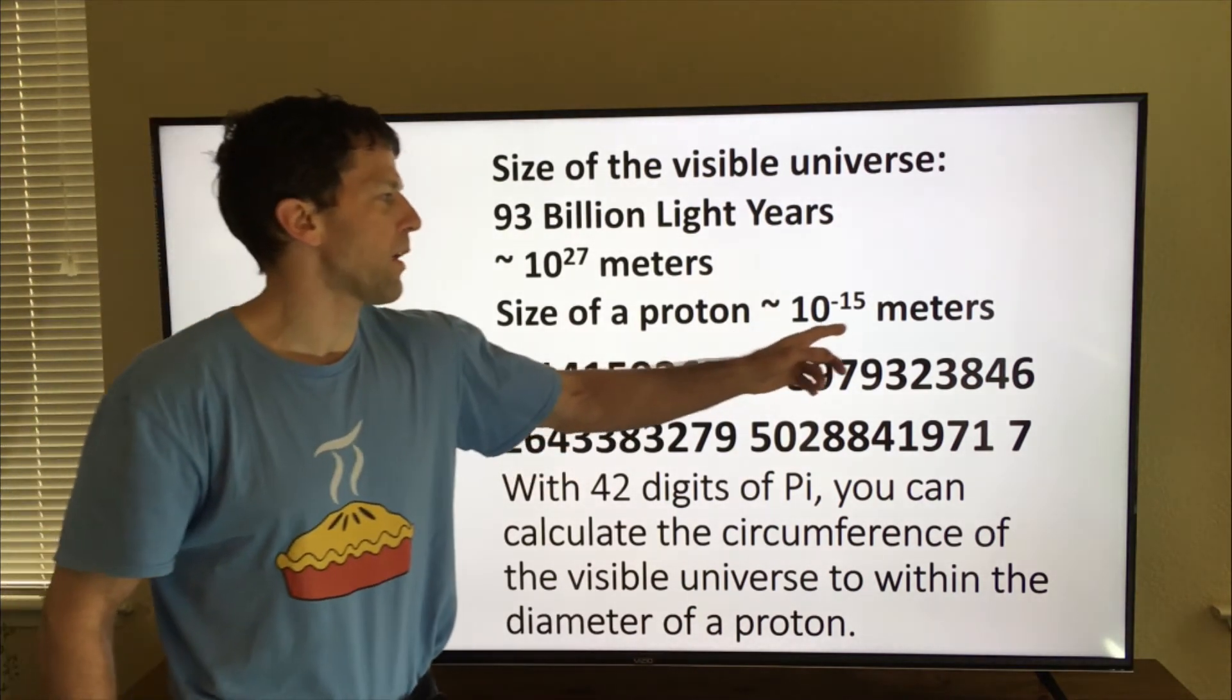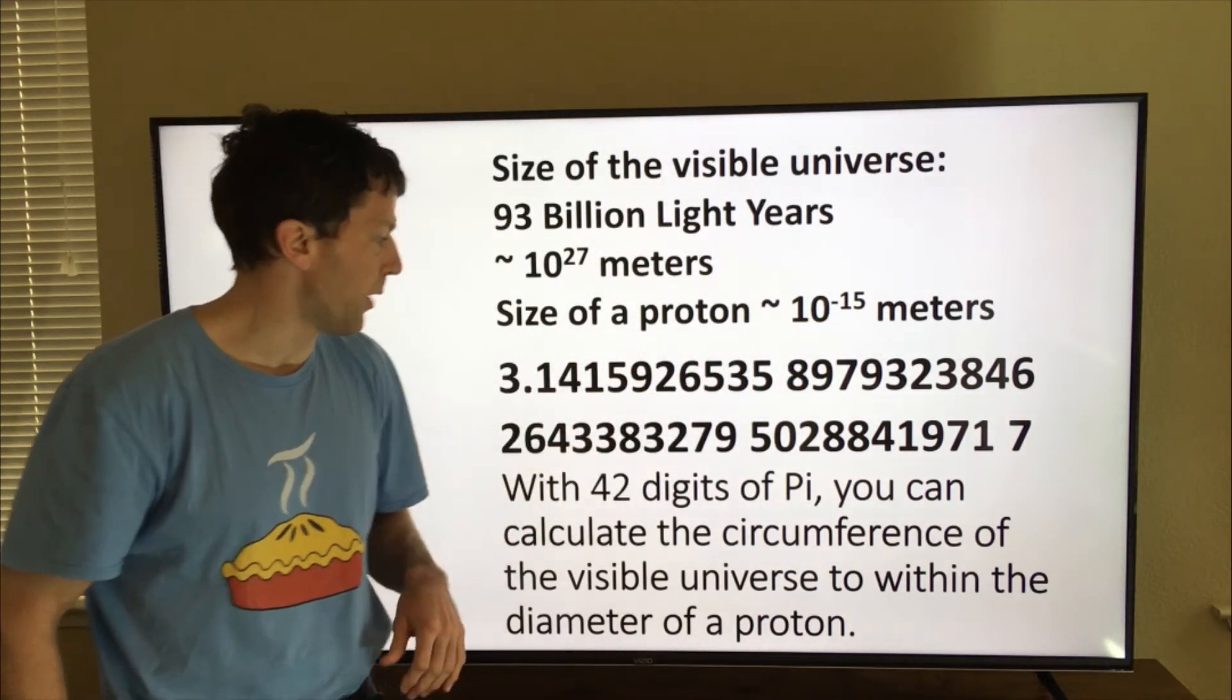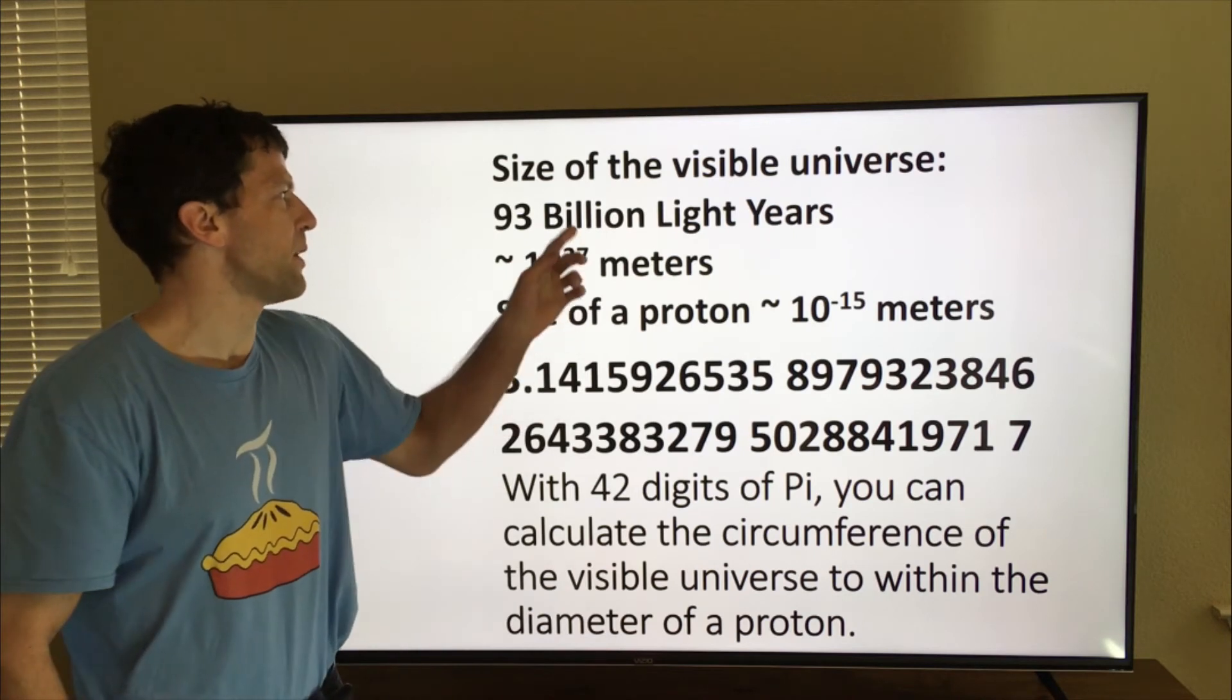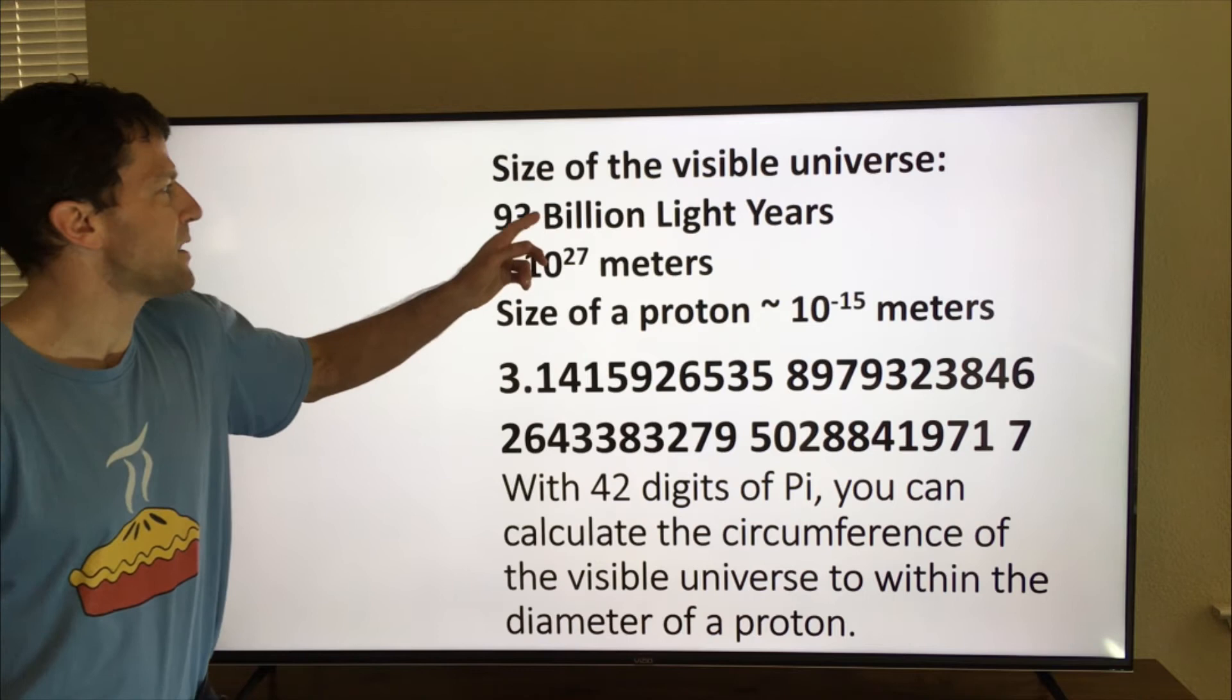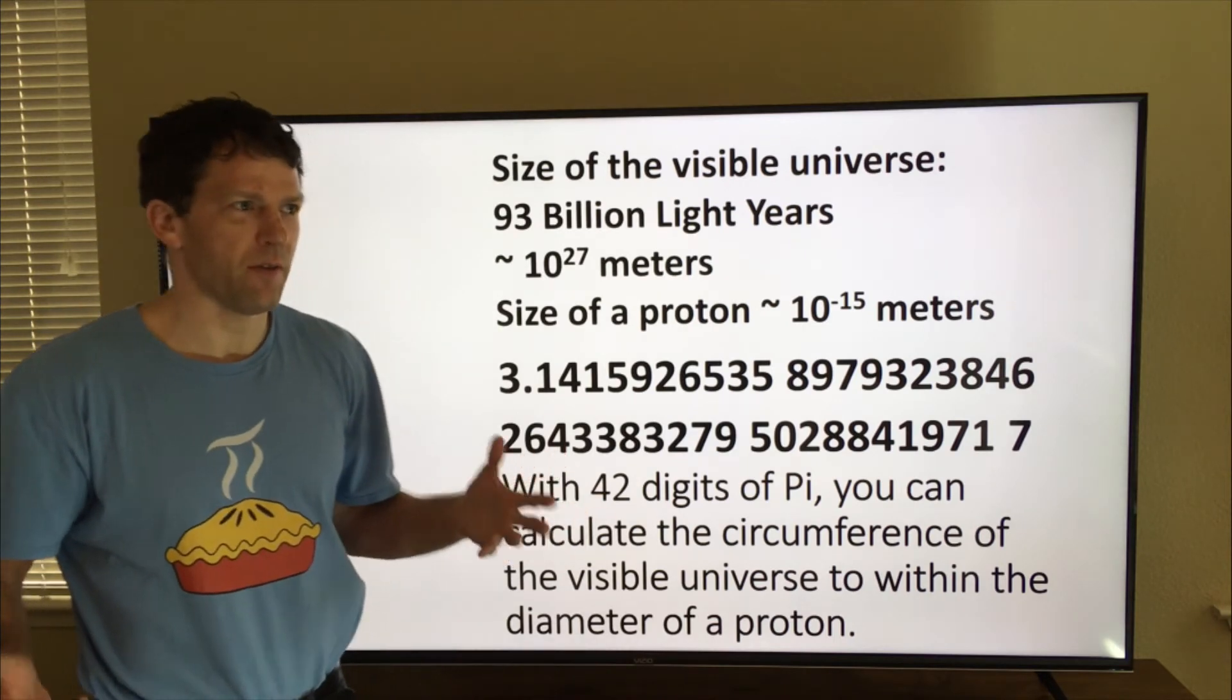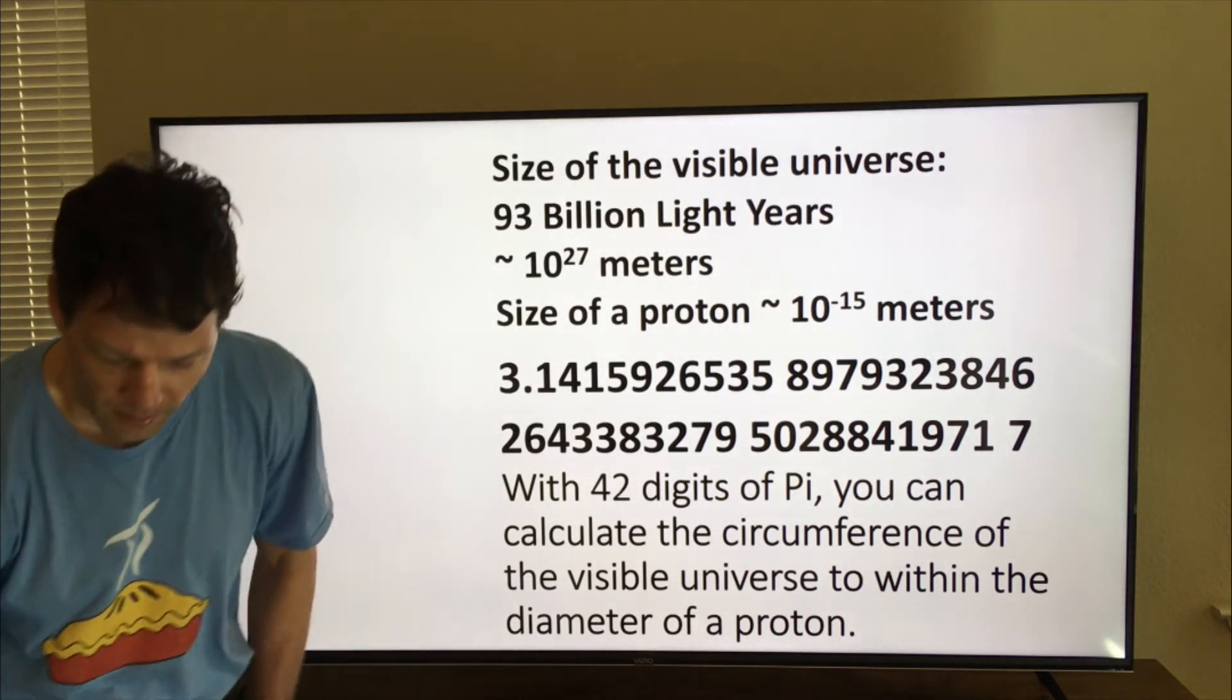Well, the Planck length scale is about 20 orders of magnitude smaller than that. So maybe 20 more digits if you want to go down to the Planck length scale. And if you want to talk about something bigger than the visible universe, this Fermilab guy, Fermilab has a really good YouTube channel. And he said that we know for sure the size of the actual universe has to be at least 250 times bigger than the visible universe. I thought that was really cool. Check out the Fermilab guys channel.